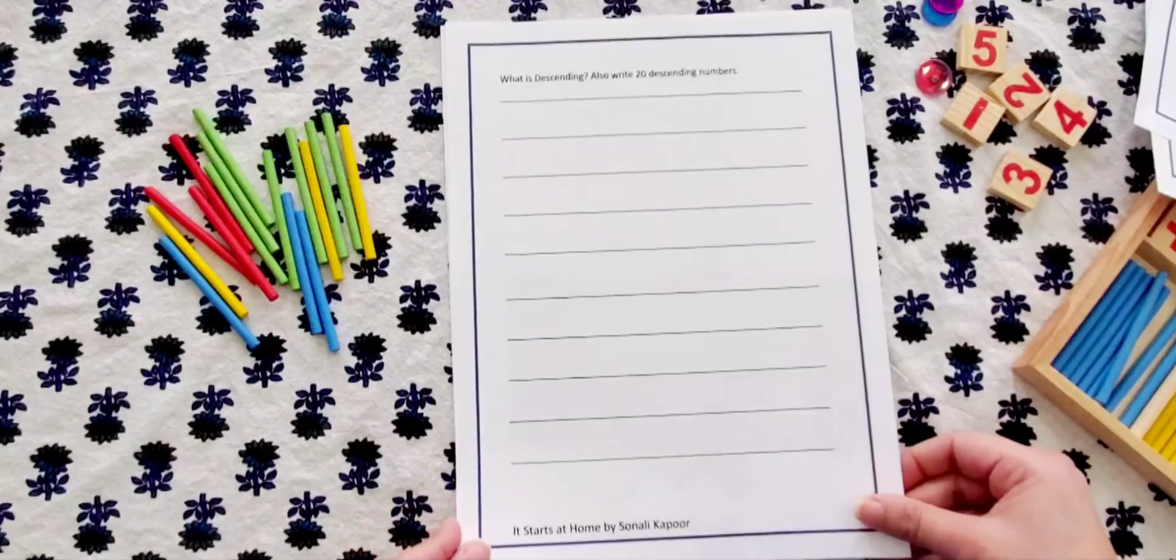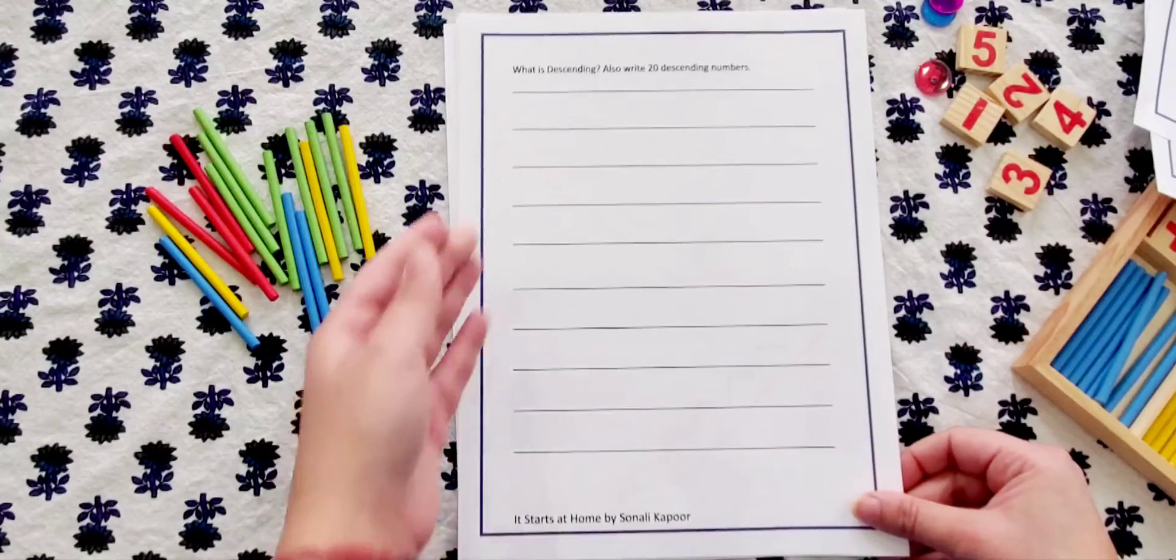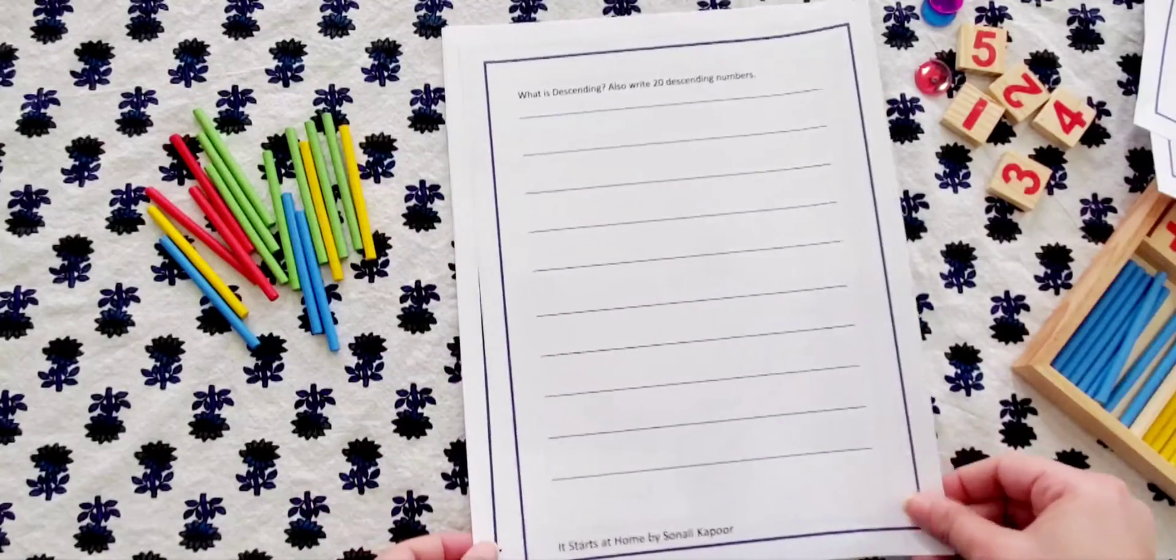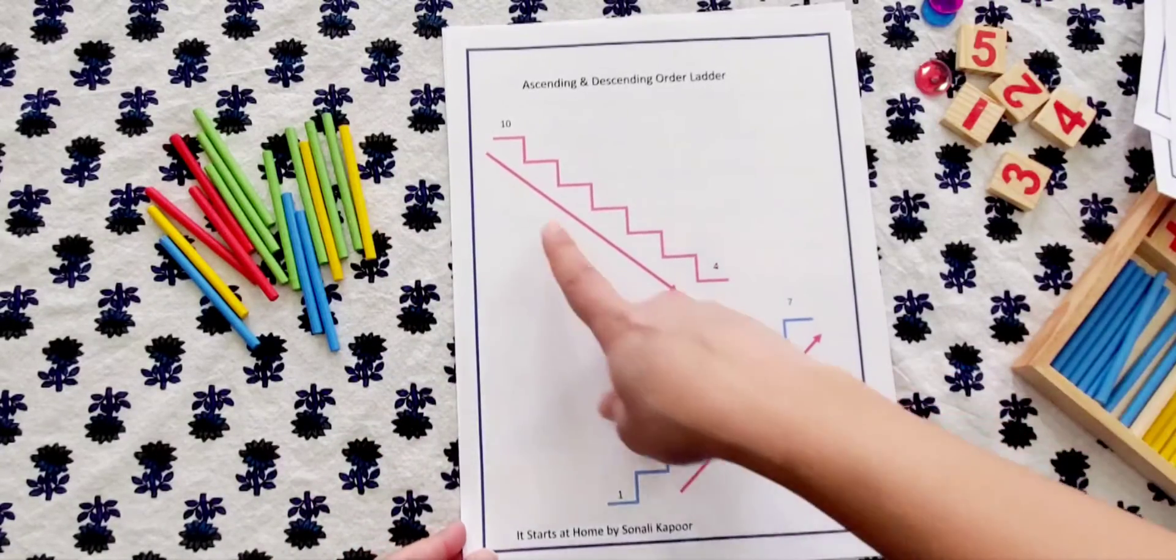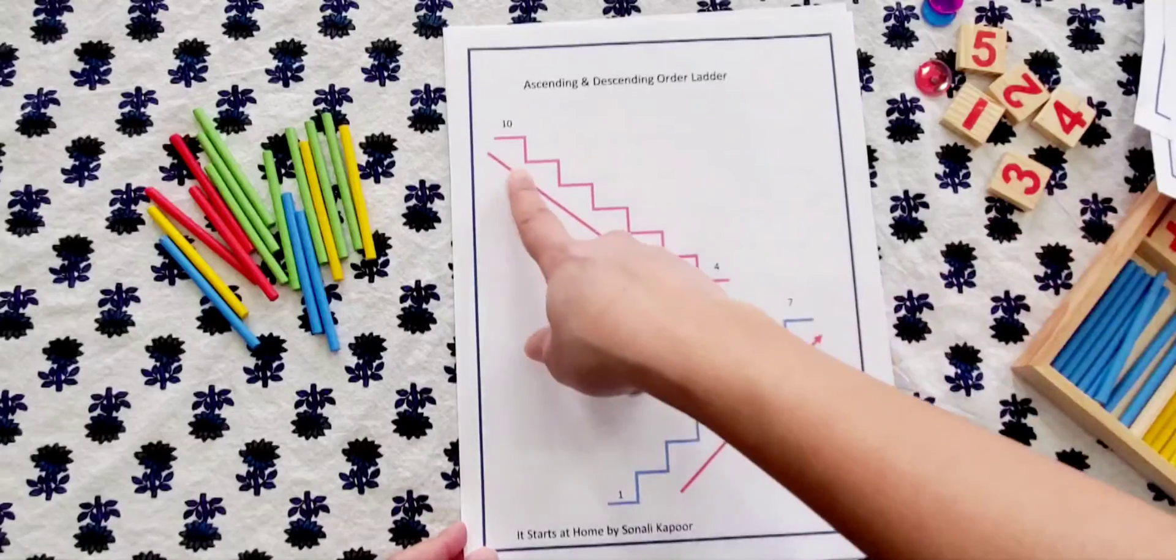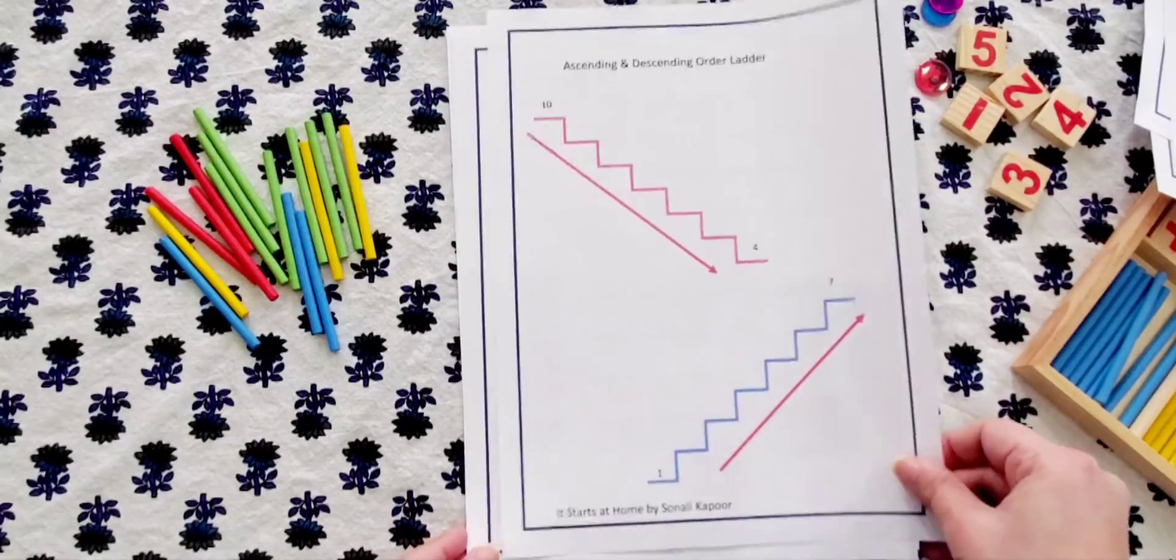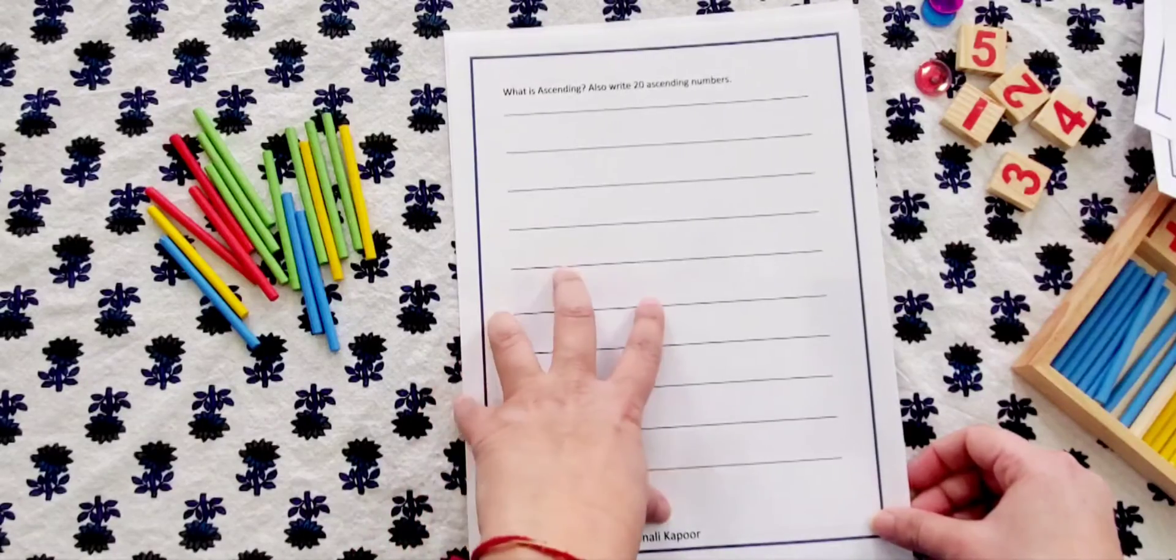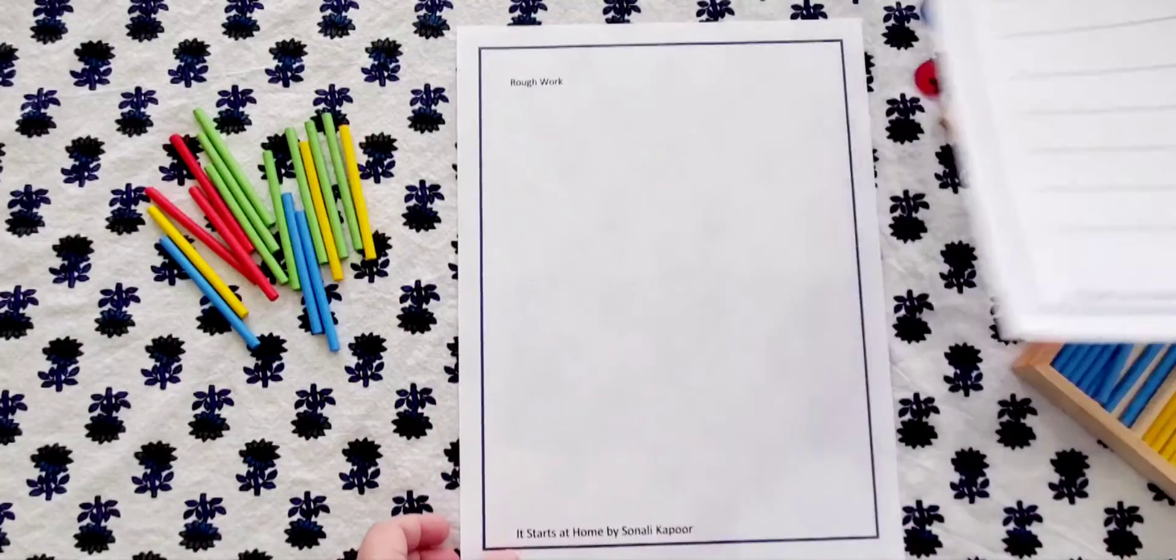Now what is descending? Also write 20 descending numbers. So the child needs to now explain and write what is descending order and needs to write 20 descending numbers. Now the child needs to just write descending numbers here and ascending numbers here. Ascending, you have to mention now what is ascending and 20 ascending numbers. And this is the sheet for rough books.